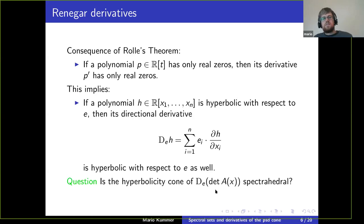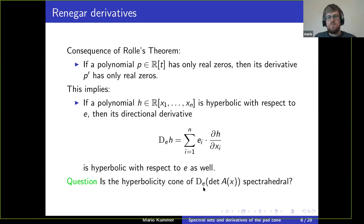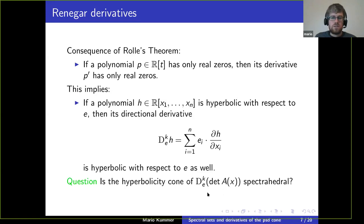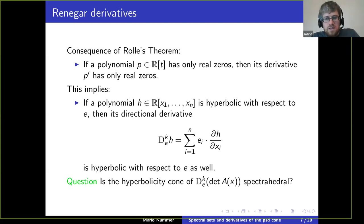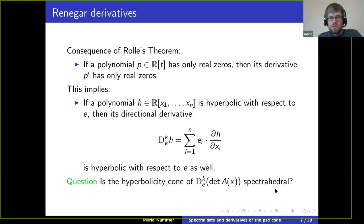So now we can take these determinant polynomials which we know are hyperbolic, take a derivative, and ask if the hyperbolicity cone of the resulting polynomial is still spectrahedral. We can do this several times — take higher derivatives and still get a hyperbolic polynomial — and ask whether the hyperbolicity cone is spectrahedral. This is the question that was asked at the problem-solving day, I think by Nikiél, and the content of this talk is the answer to this question.